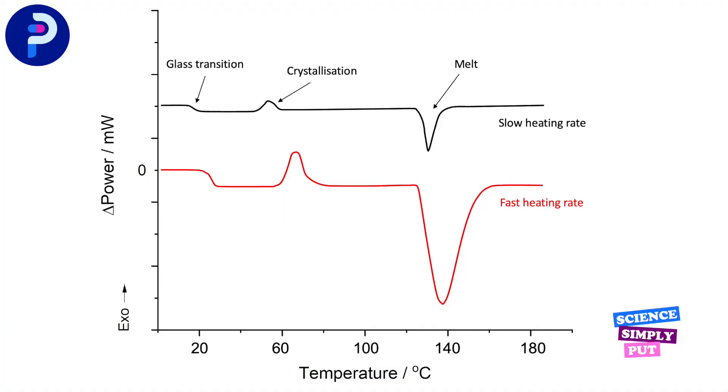And just to test your new skills, looking at these data again — can you tell me whether the glass transition is a kinetic or a thermodynamic event? It's a kinetic event because it appears at a higher temperature at the faster heating rate. We'll discuss why that is in a later video, but well done for testing your new skills on DSC interpretation.